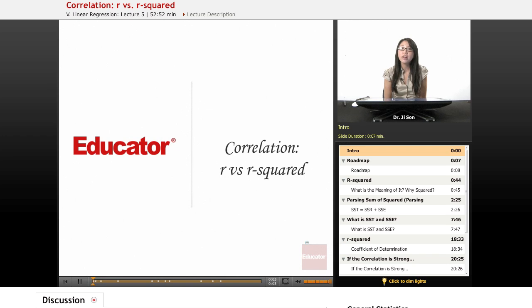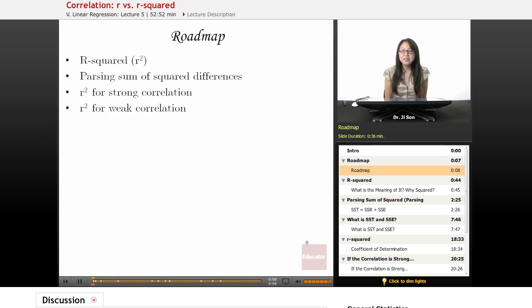We're going to be talking about the difference between r, which we learned about before, and r squared. So first, I'm just going to introduce the concept of r squared and why we need to understand it. Why can't we just square r and be like, that's r squared?